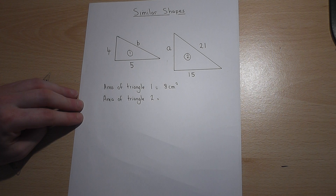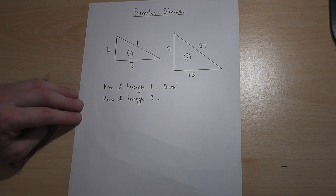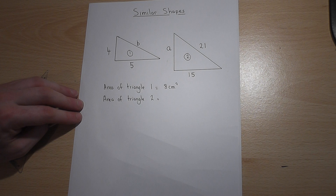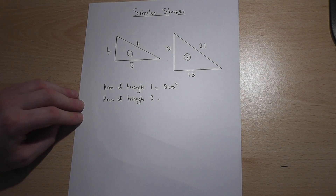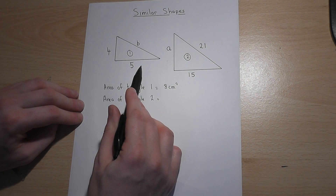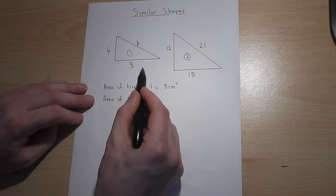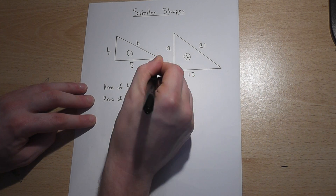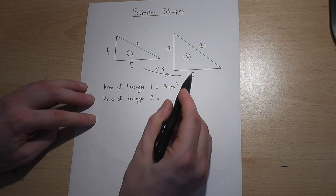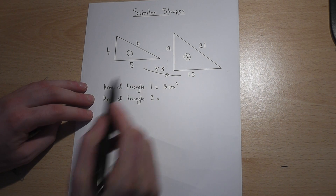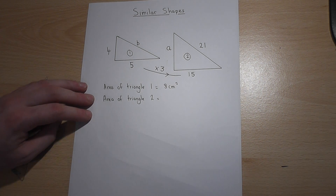When you see the phrase 'similar shapes', one must think of multiplying and division, because when shapes are similar it means that one of them is an enlargement of the other. We can see by looking at two of the corresponding sides that if we do 15 divided by 5, triangle 2 is three times as big as triangle 1. So 15 divided by 5 equals 3, and this means that all the sides have been enlarged by a factor of 3.